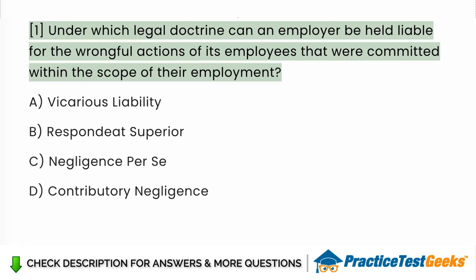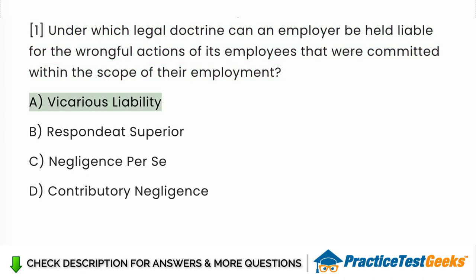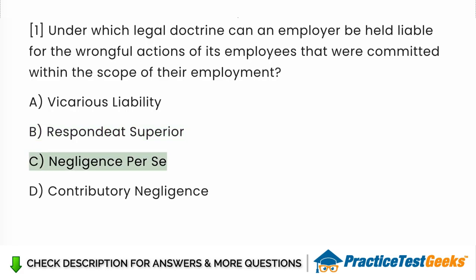Under which legal doctrine can an employer be held liable for the wrongful actions of its employees that were committed within the scope of their employment? a. Vicarious liability. b. Respondeat superior. c. Negligence per se. d. Contributory negligence.